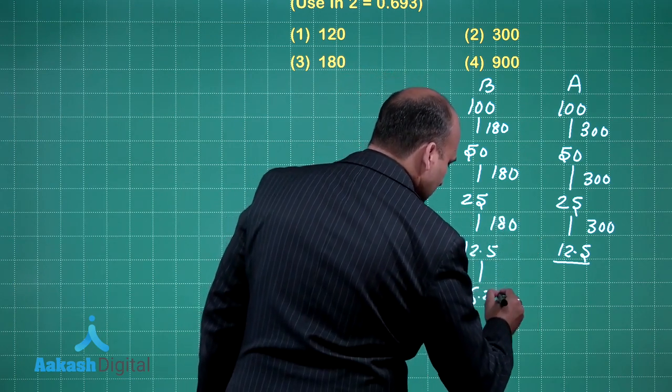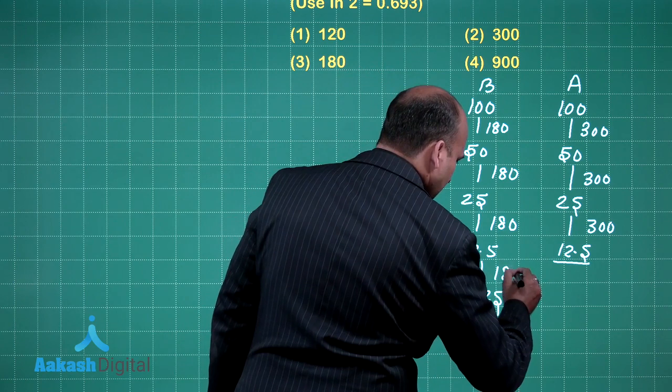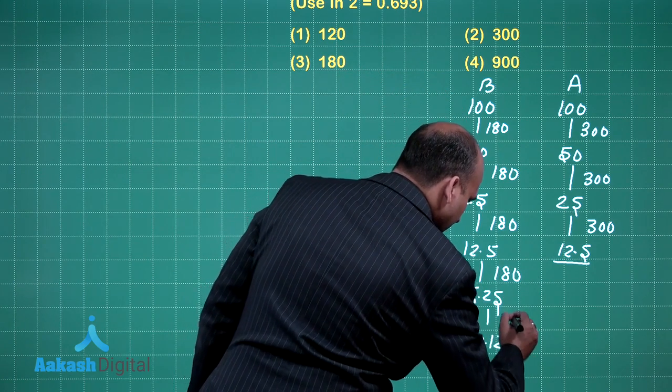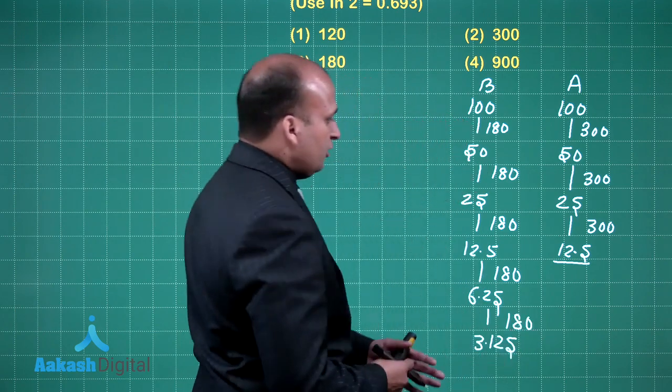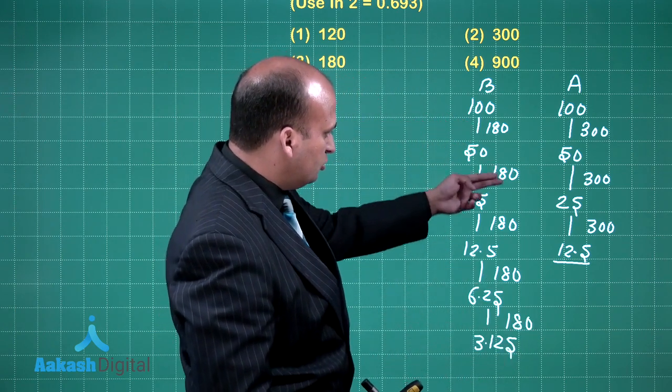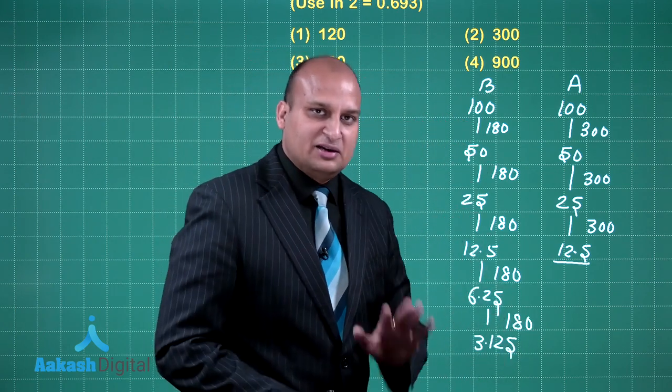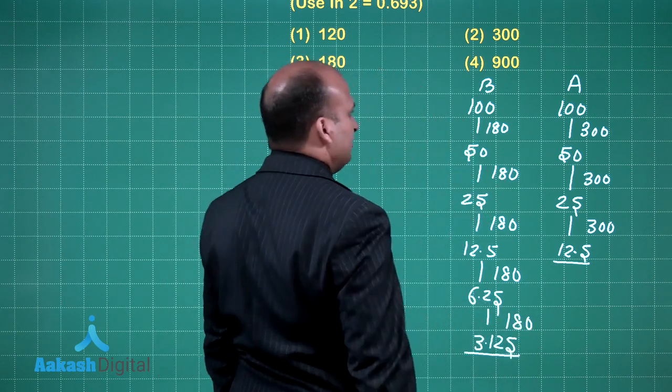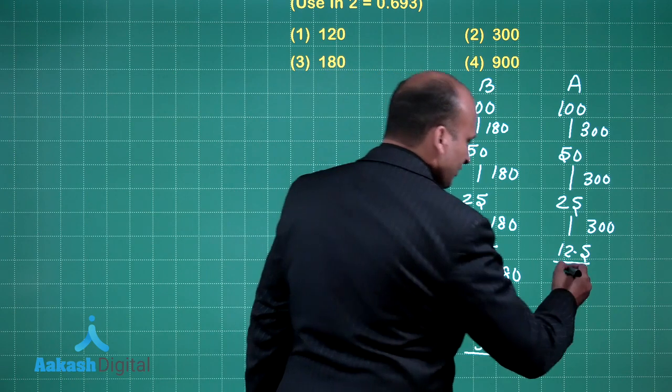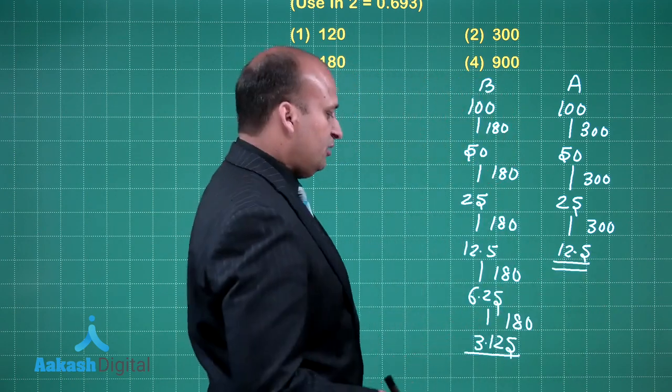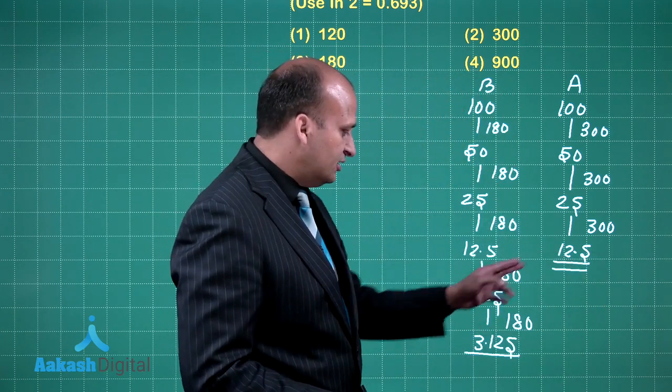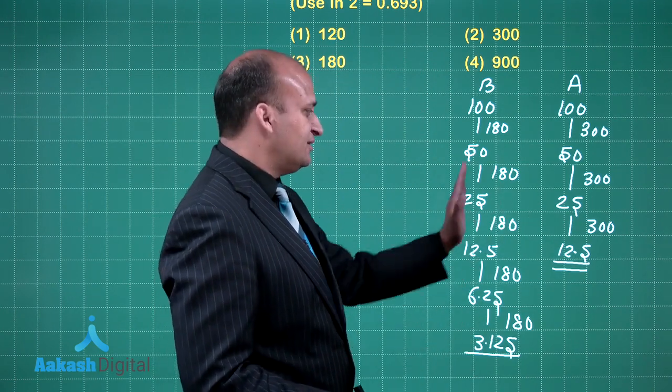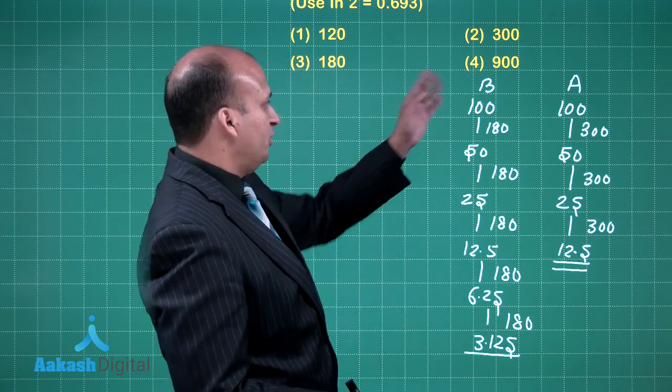Then 12.5 to 6.25, another 180, 6.25 to 3.125, another 180. Now if you add the total time taken 1, 2, 3, 4, 5, so that is 900 seconds. Now what is the concentration of B, 3.125, what is that of A, 12.5, so don't you think A is 4 times of B. So you have got the answer as 900 seconds, option is 4th.